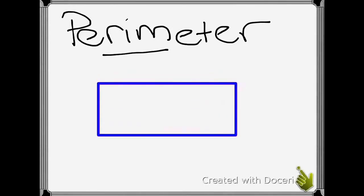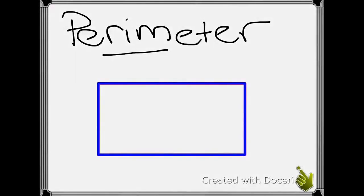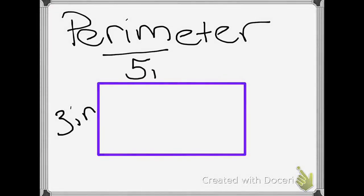When not all the side lengths are given, you need to think about what you know about shapes. Let's look at this rectangle. I know that this side is 3 inches, and then it tells me that this side is 5 inches. But it doesn't give me all the sides.